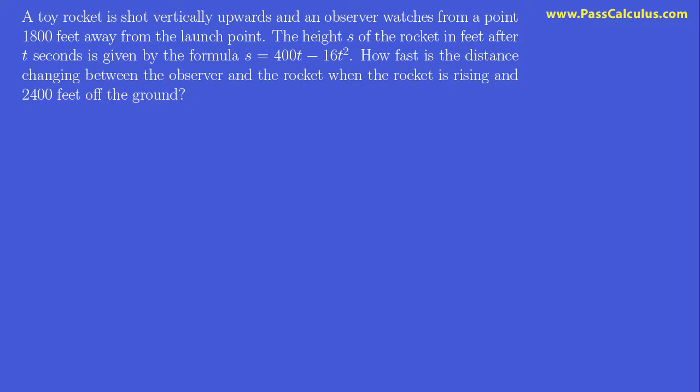A toy rocket is shot vertically upwards and an observer watches from a point 1,800 feet away from the launch point. The height s of the rocket in feet after t seconds is given by the formula s = 400t - 16t². How fast is the distance changing between the observer and the rocket when the rocket is rising and 2,400 feet off the ground? So this is a little bit different than we're used to. Let's start by drawing a diagram.